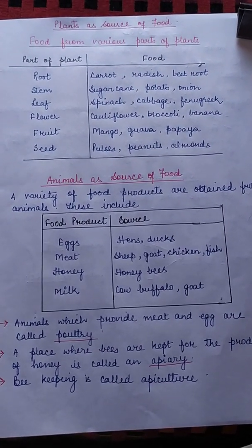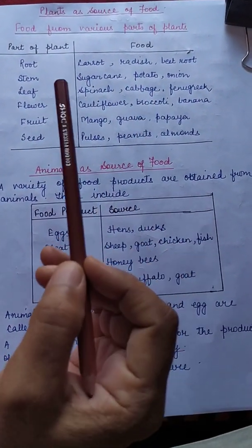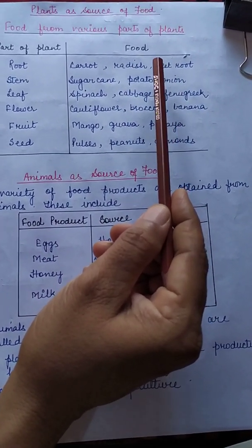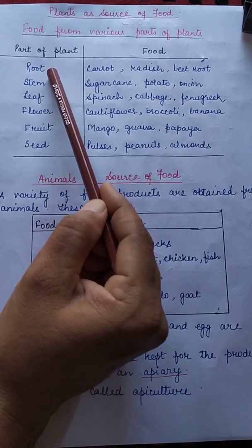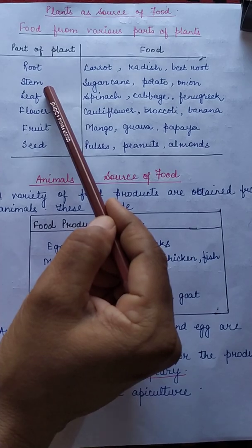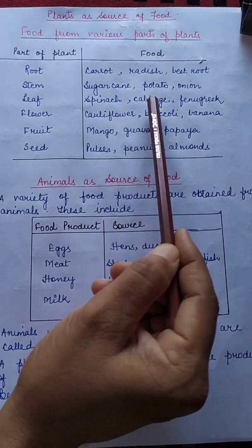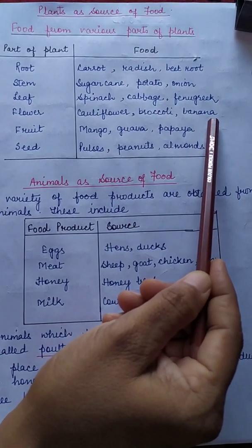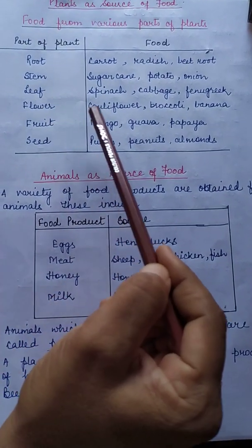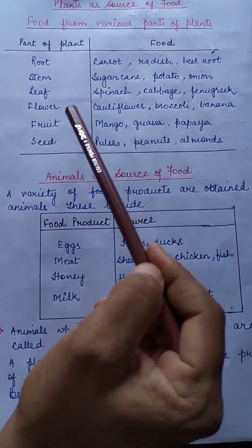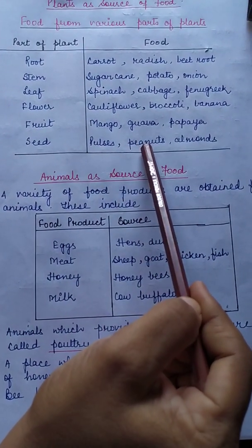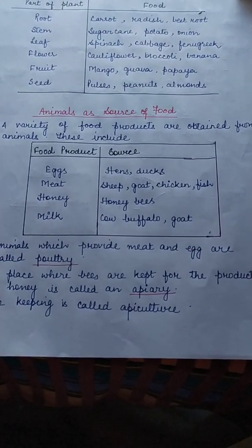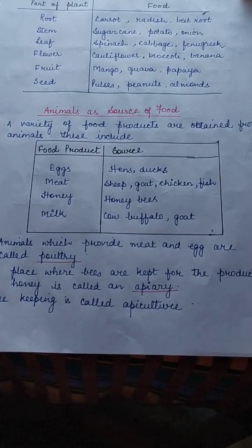This table lists plant parts and the food obtained from each part. Food is stored in different parts of the plant. For example, nuts and almonds are the seeds of the plant.